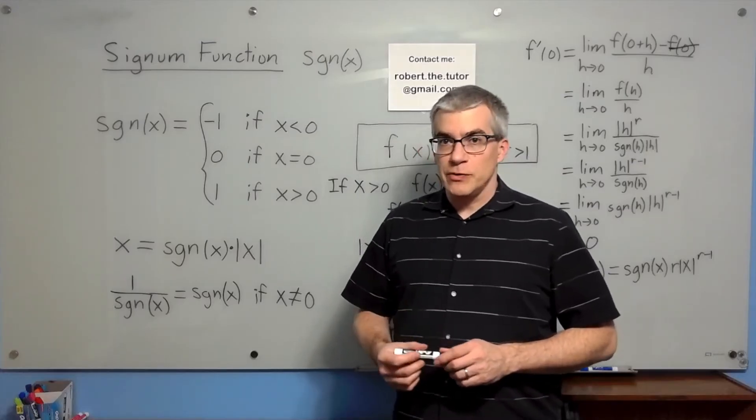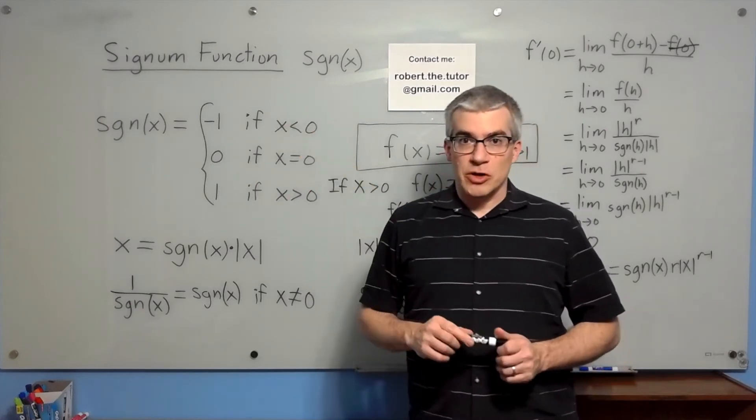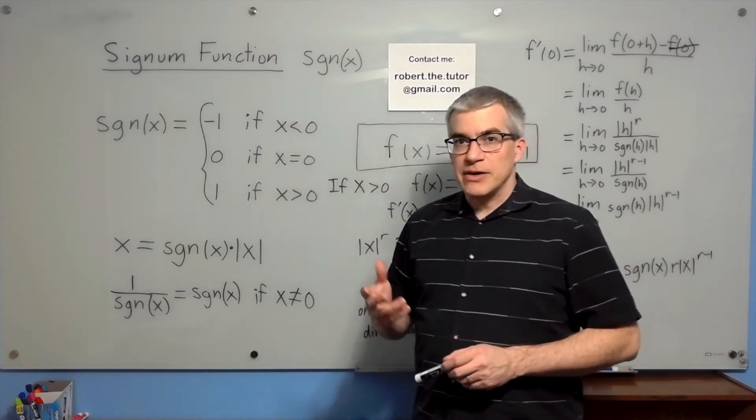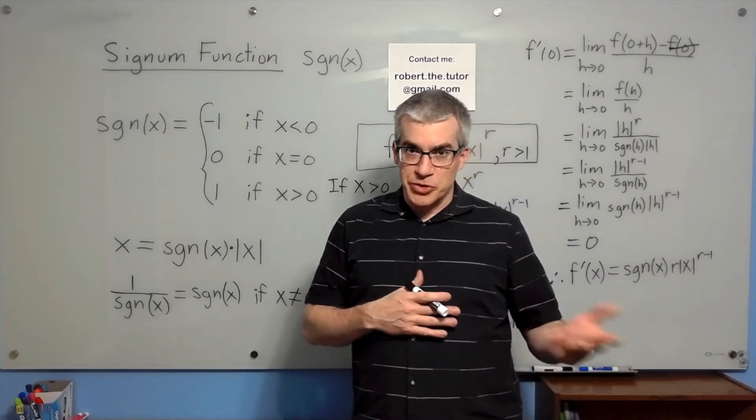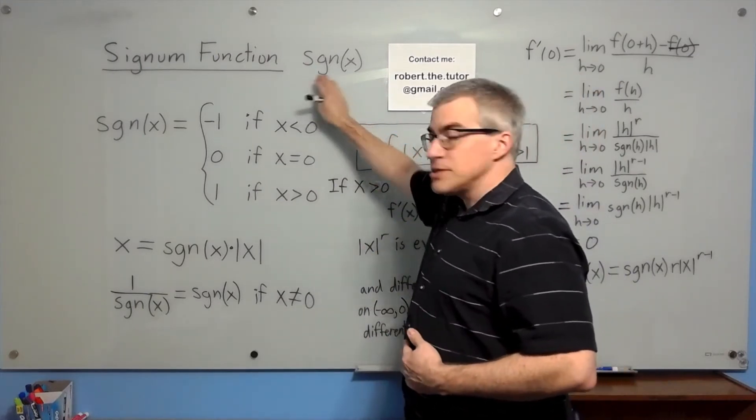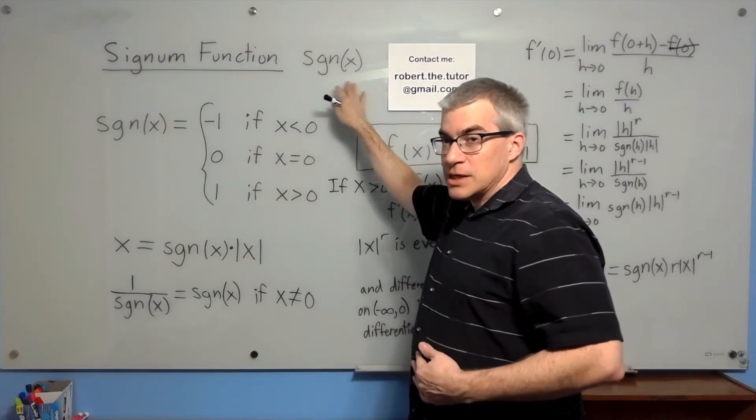Here's an example of a derivative that uses the signum function. Signum is Latin for sine, but if we say the sine function, people would think we're doing trigonometry. So we say signum function, and it's written S-G-N. Some books write S-I-G-N.